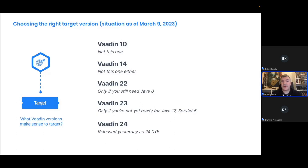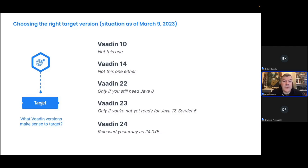Vaadin 23 is definitely the stable choice otherwise. It's been out for a year and will continue to be supported for another year with free support, then following regular extended maintenance protocols published on our website. There is also Vaadin 22, which is an exceptional version we've supported a bit longer than normal because a number of companies still depend on Java 8. If you absolutely can't move away from Java 8, Vaadin 22 would be your best choice.